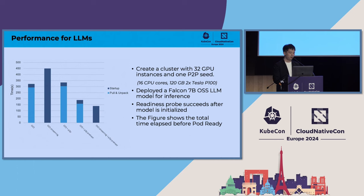This is the summary of our test. We could only create a cluster with 32 nodes since GPUs are hard to find. The results show that even without data preheating, P2P will not bring a performance loss. After data preheat, the OCI image with P2P can finish the startup and model loading within 2.5 minutes.